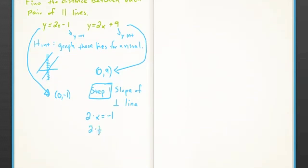So the first step is to find the slope of the perpendicular line, so we can write an equation for it. Remember, you take the negative inverse of the slope of the parallel lines, so we get the slope equals -1/2.